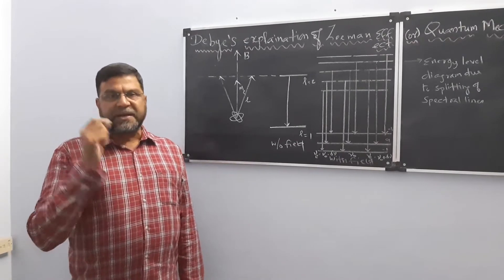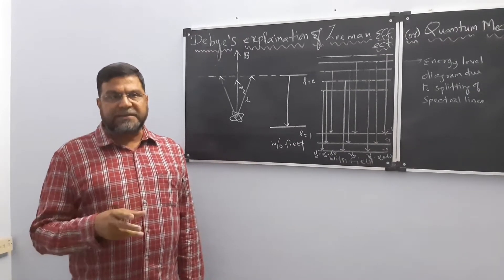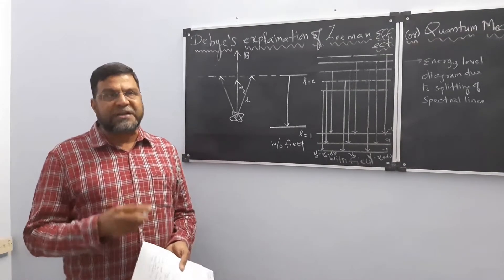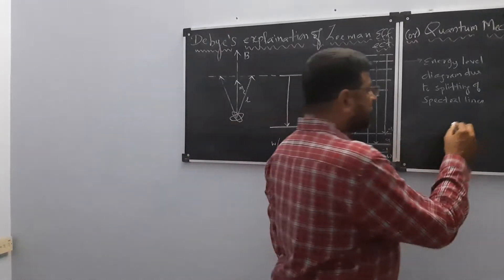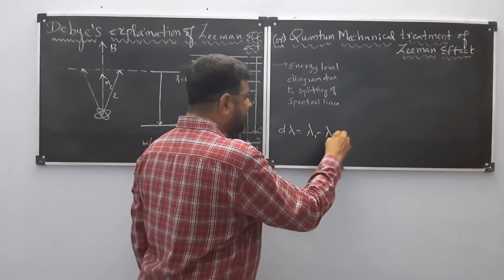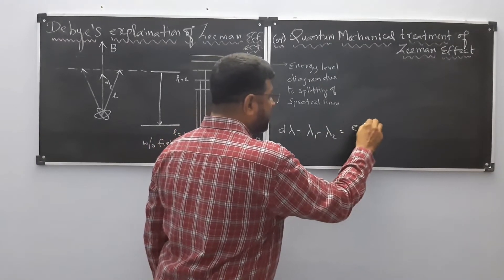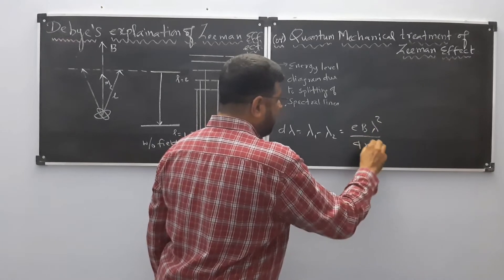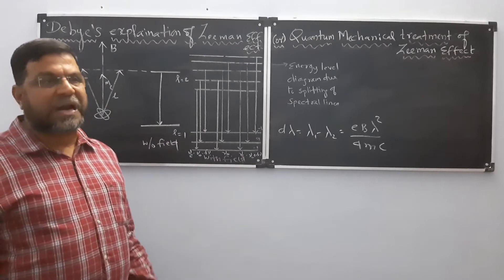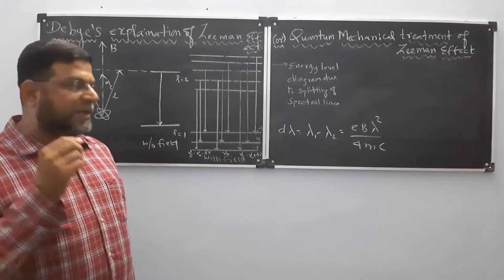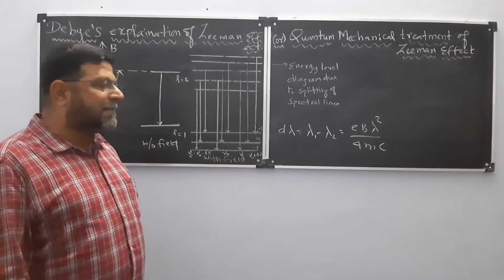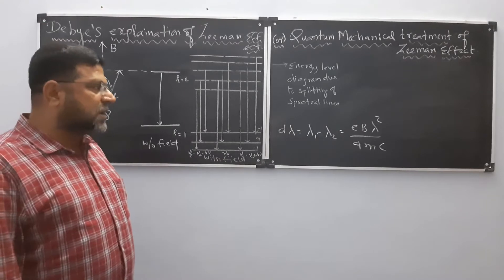You have to know the difference between Zeeman effect, normal Zeeman effect, and anomalous Zeeman effect. The difference between two wavelengths, delta lambda, is equal to eBλ²/4mc. This is the Zeeman splitting — the difference between two spectral lines due to the application of a magnetic field.